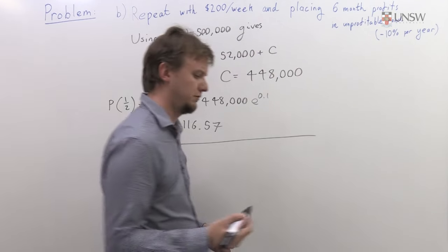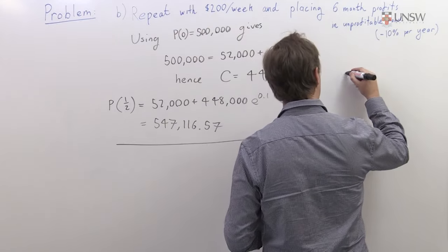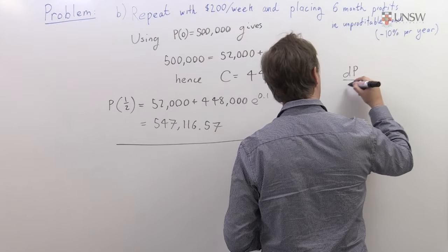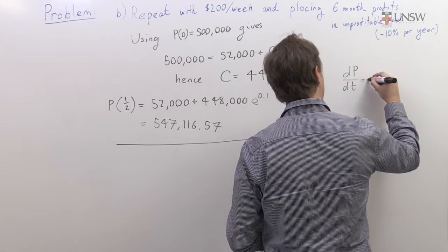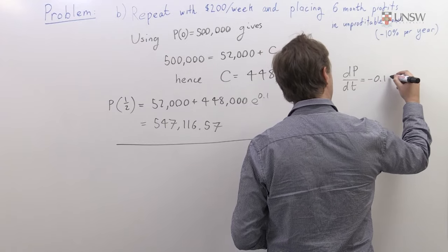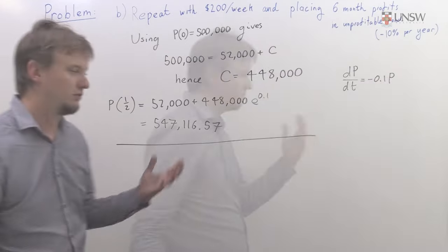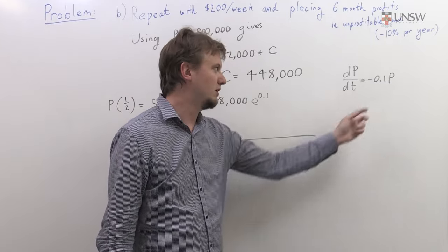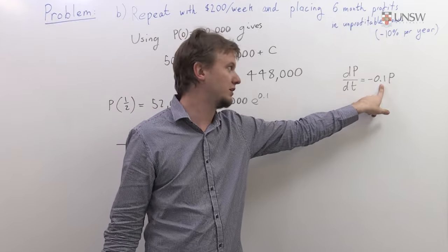If you remember the equation for the unprofitable loan, it's just going to be pretty much the same as our first equation. It's just going to be dP/dt equals minus 0.1P. This is the same equation we had before, but instead of 0.2, we have minus 0.1.